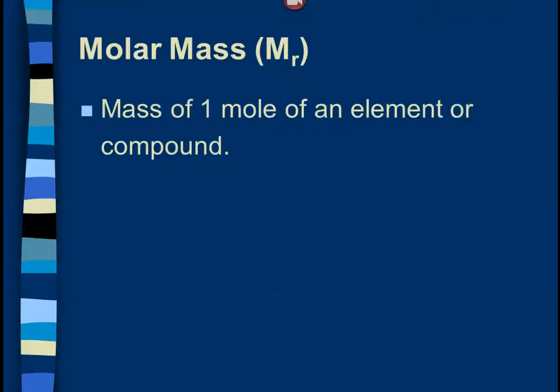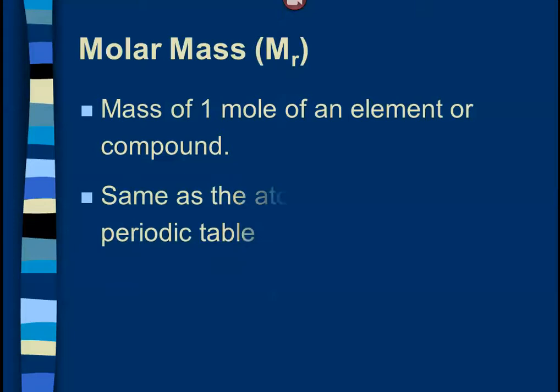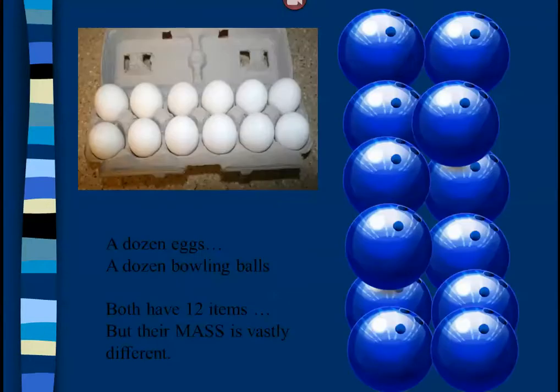Okay, so molar mass. Molar mass is: if I had 6.02 times 10 to the 23rd things, what would it weigh? What would its mass be? So it's the mass of one mole of an element or compound. And it happens to be the same as the mass on the periodic table. That's actually why that number was picked — the 6.02 times 10 to the 23rd number was picked so it would work out that way. The mole is a super important concept in chemistry, so I want us to really think about it in a lot of different ways.